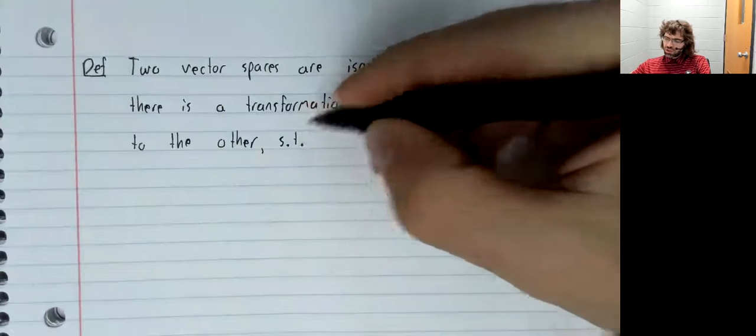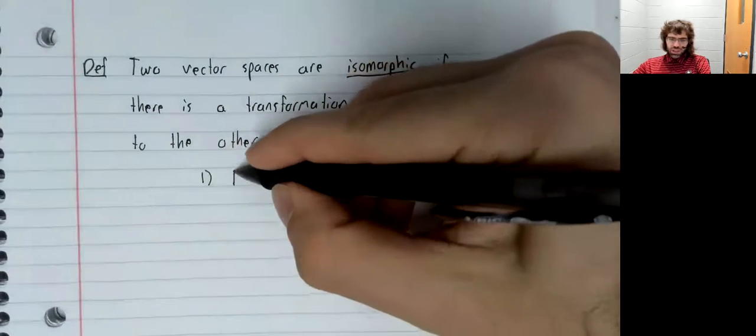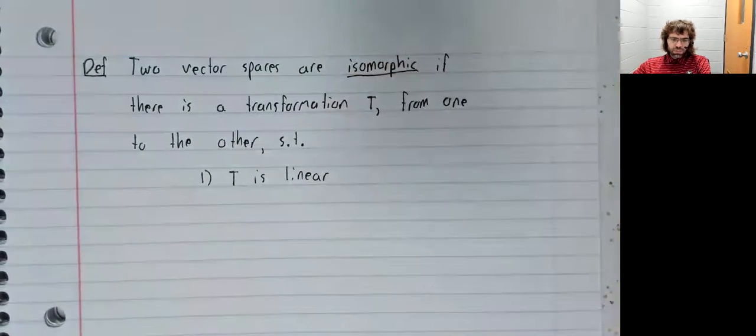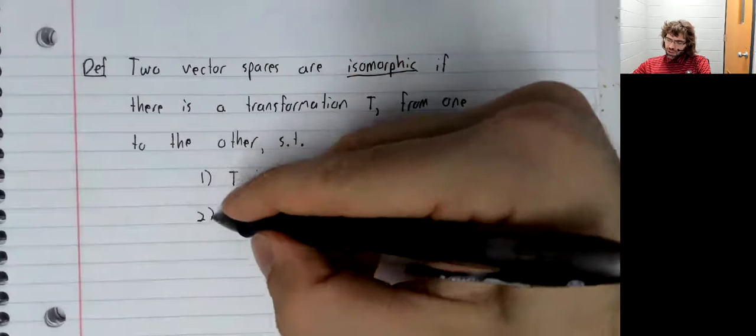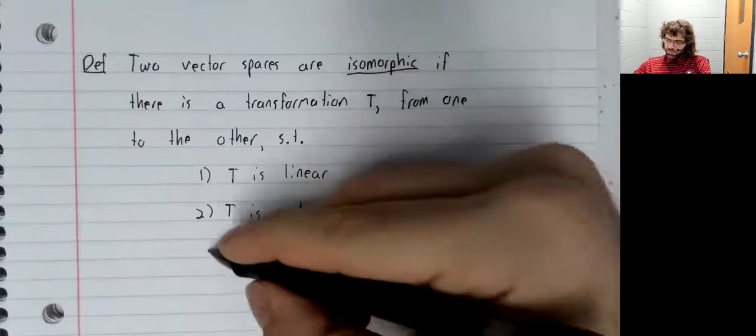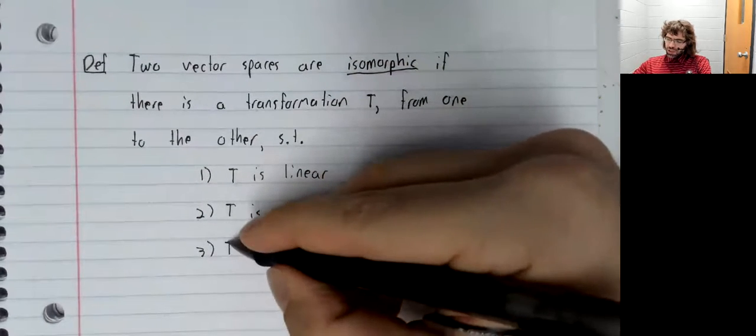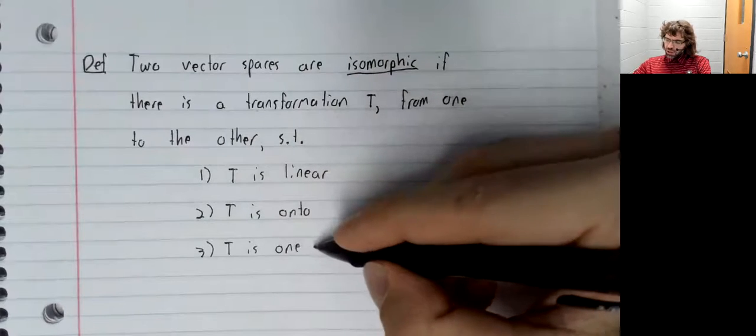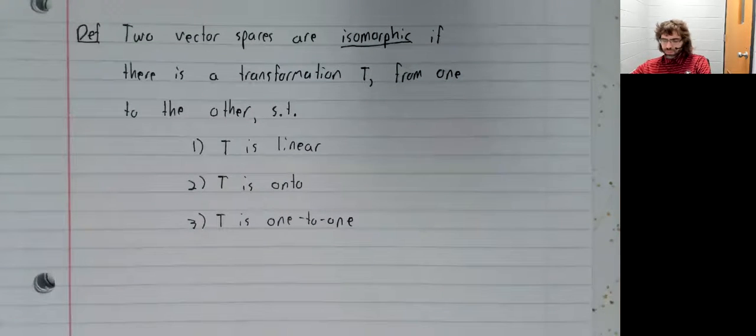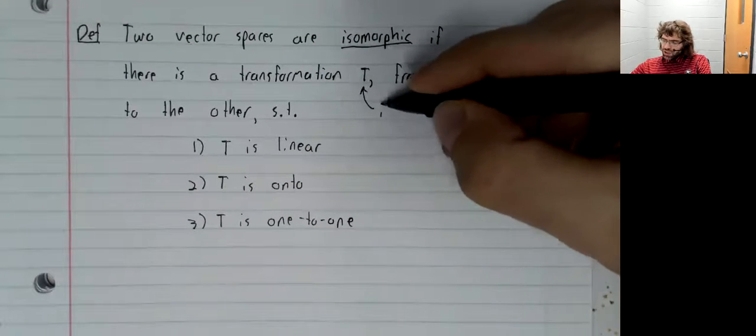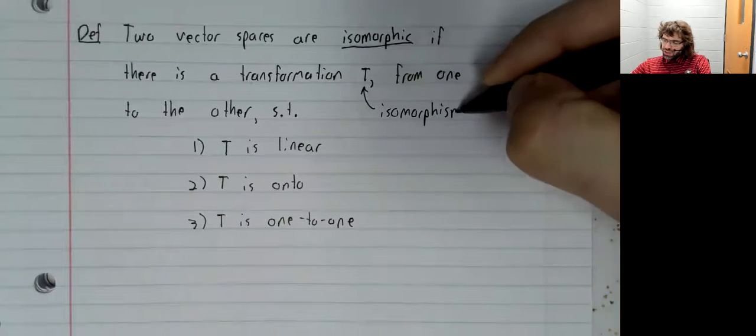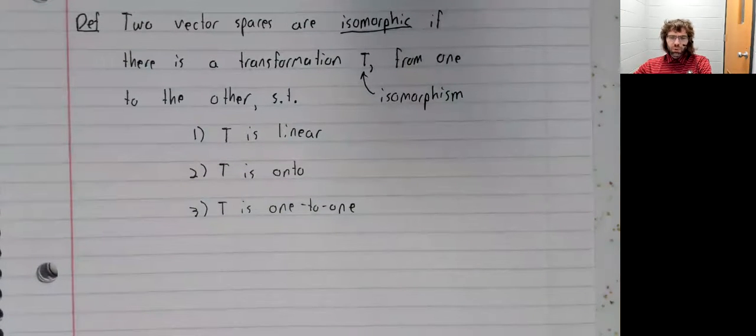Such that T is linear, T is onto, and T is one-to-one. If we have these conditions, T is called an isomorphism.